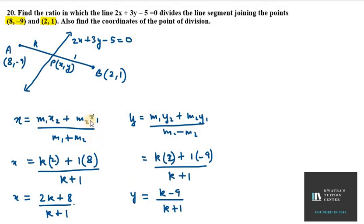x is known, y is known. Now we will substitute these values in this equation, this equation is 2x plus 3y minus 5, so put the values of x and y in this equation and you will get your value for k.